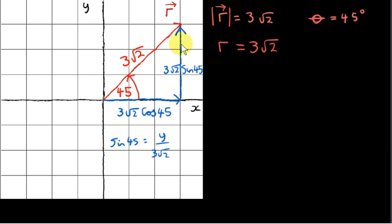Also, to get the side opposite 45 degrees, we multiply the hypotenuse by the sin of 45 degrees. That comes from the fact that the sin of 45 degrees is the side opposite 45 degrees in this right-angled triangle, which is the y value of this point. So this distance is the y value of this point, divided by the hypotenuse, which is 3 root 2. And then we just cross-multiply.